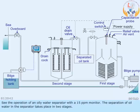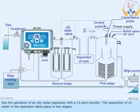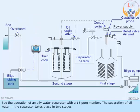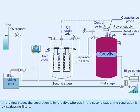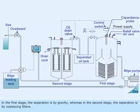See the operation of an oily water separator with a 15 ppm monitor. The separation of oil and water in the separator takes place in two stages. In the first stage, the separation is by gravity, whereas in the second stage, the separation is by coalescing filters.